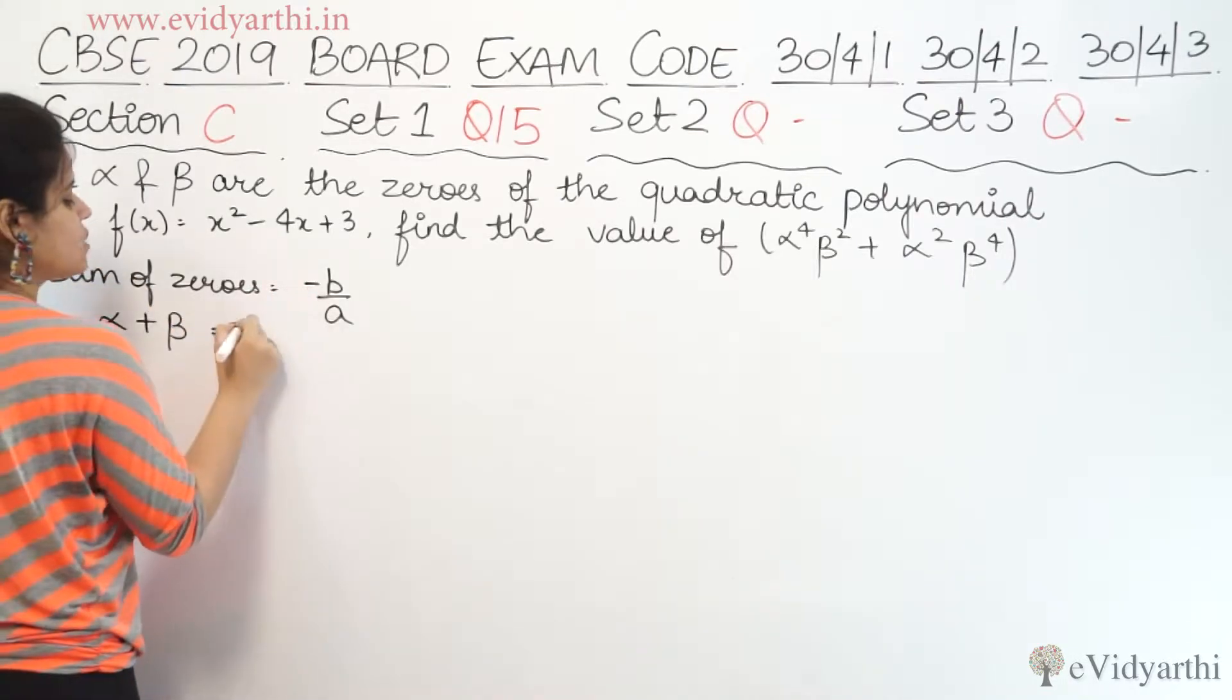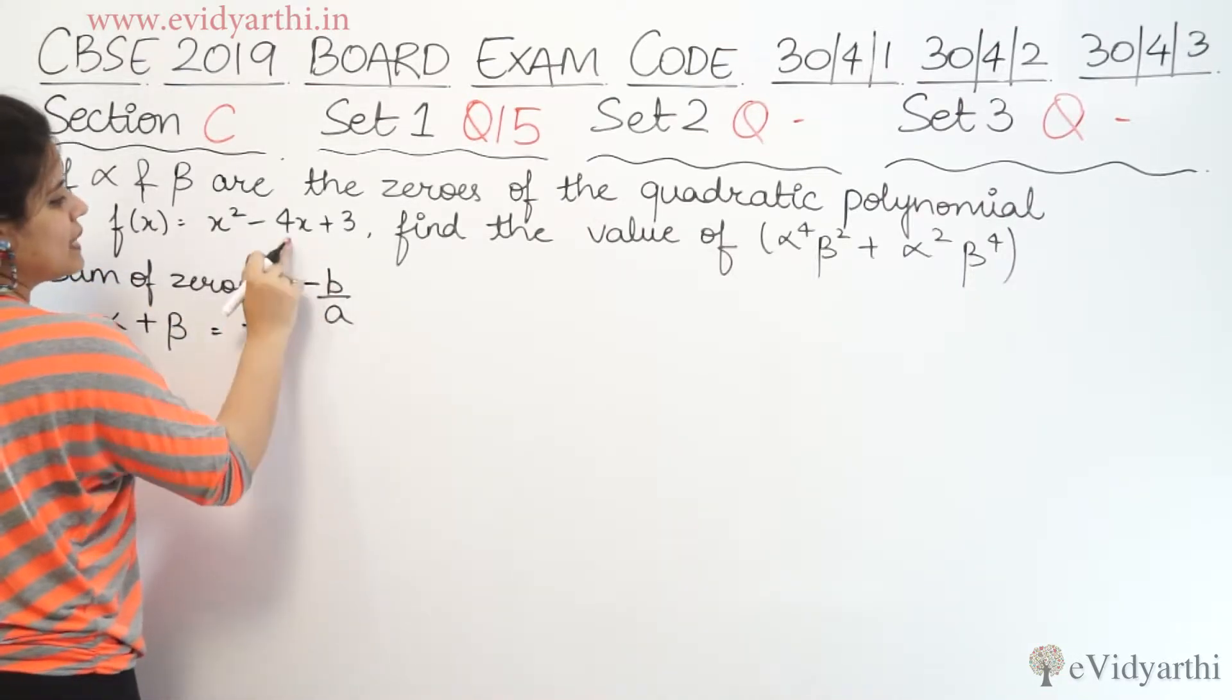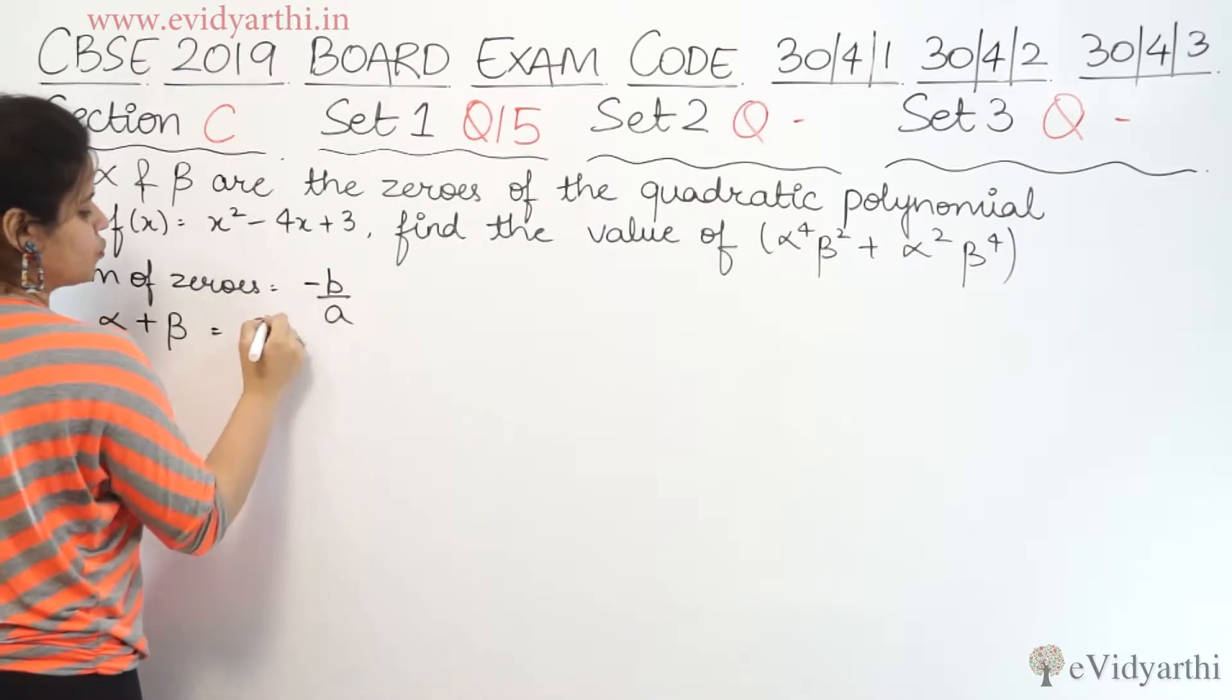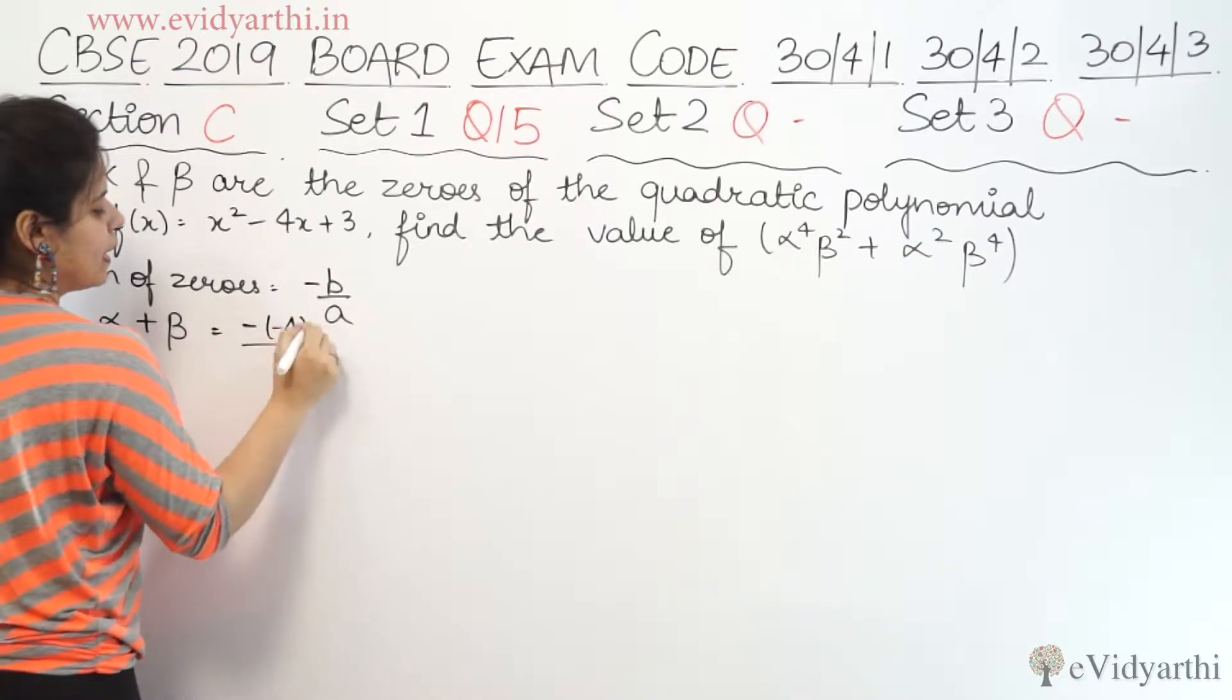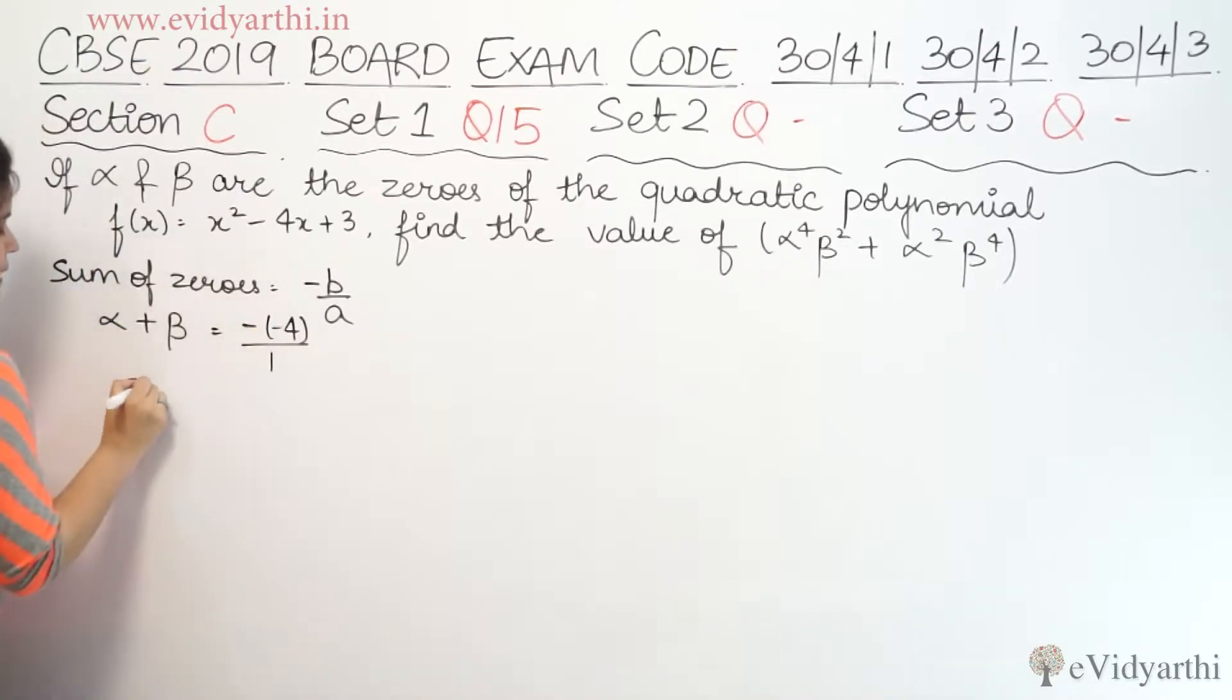So this becomes minus b, b's value is minus 4, so minus of minus 4 upon a which is 1. Minus minus plus, therefore alpha plus beta equals to 4. We have found alpha plus beta's value.